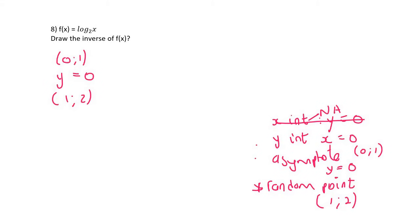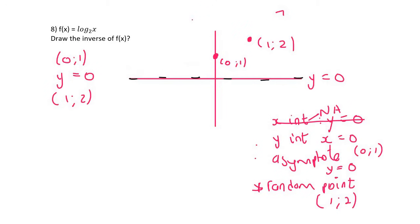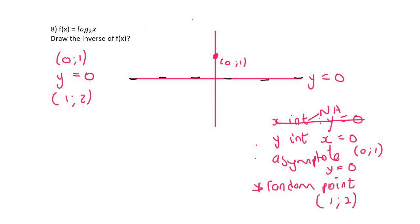So plot the points: (0, 1) and the asymptote y = 0 on the x-axis, and the random point (1, 2). Without that random point, you wouldn't know whether the graph goes up or down. By getting that one extra point, it makes all the difference. Connect the points to complete the graph.